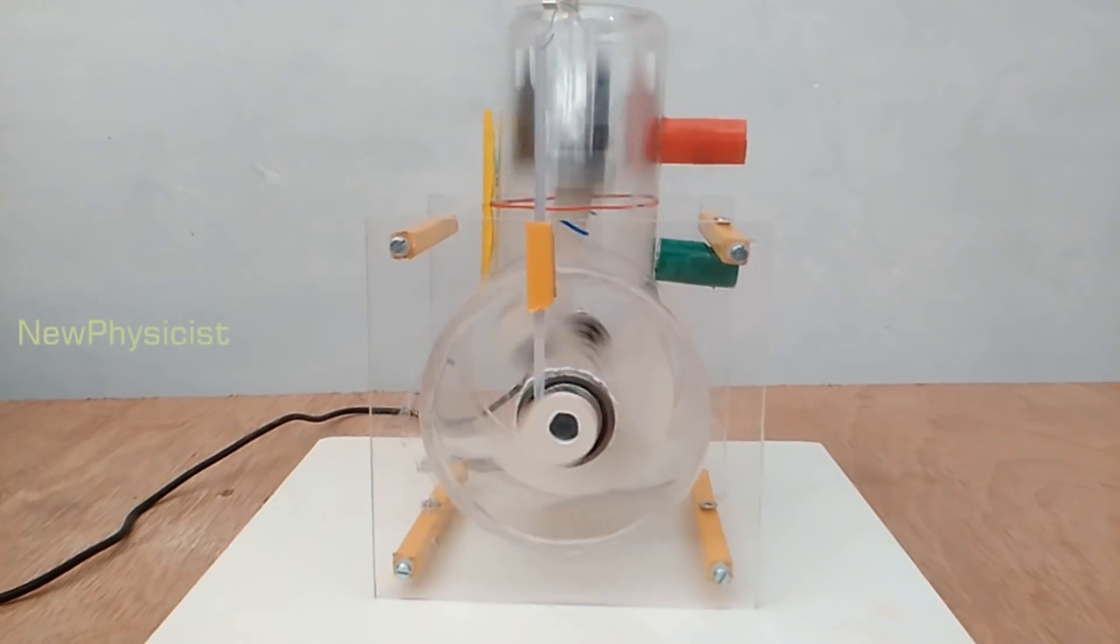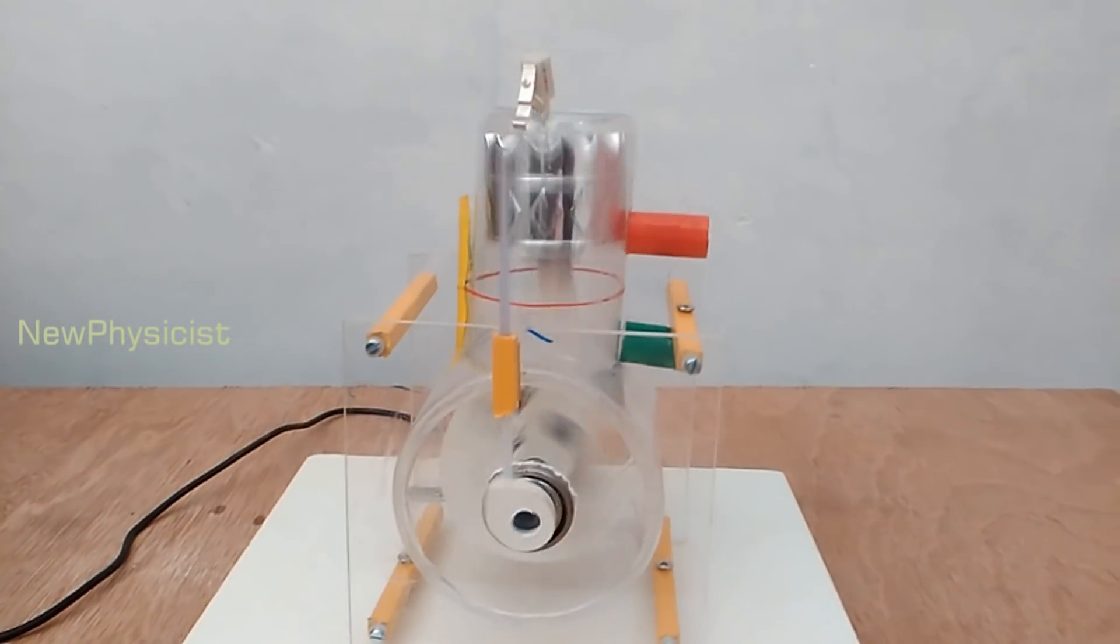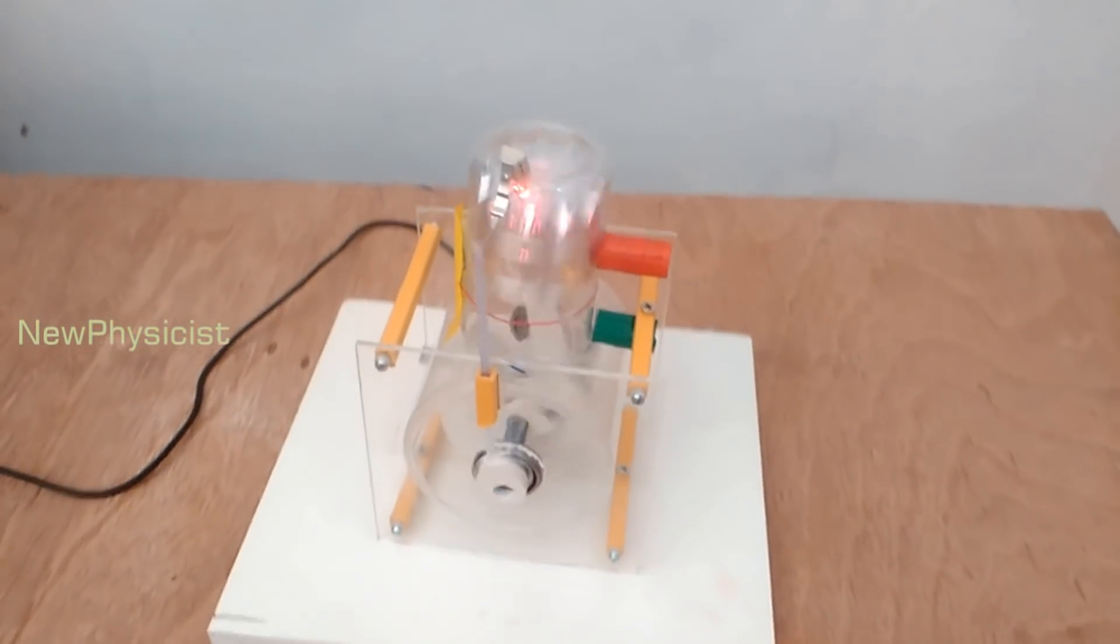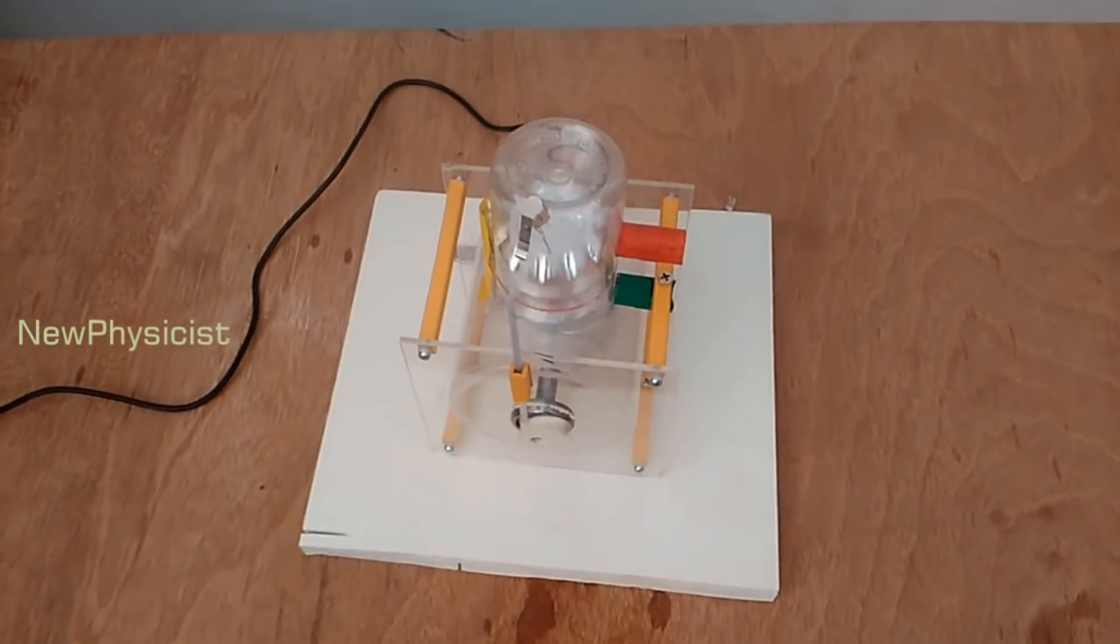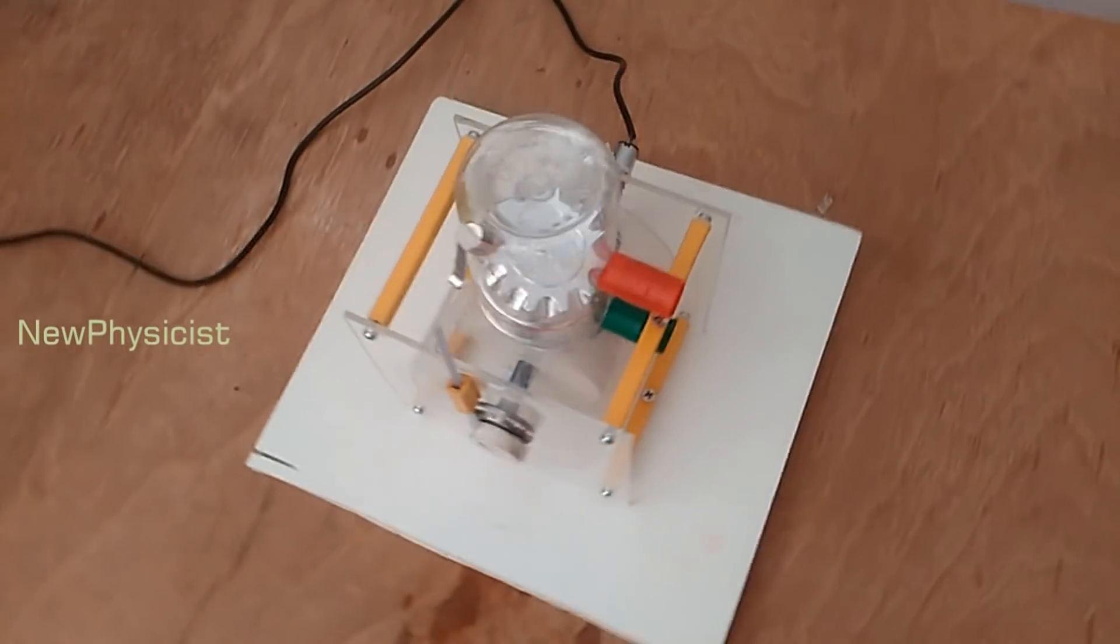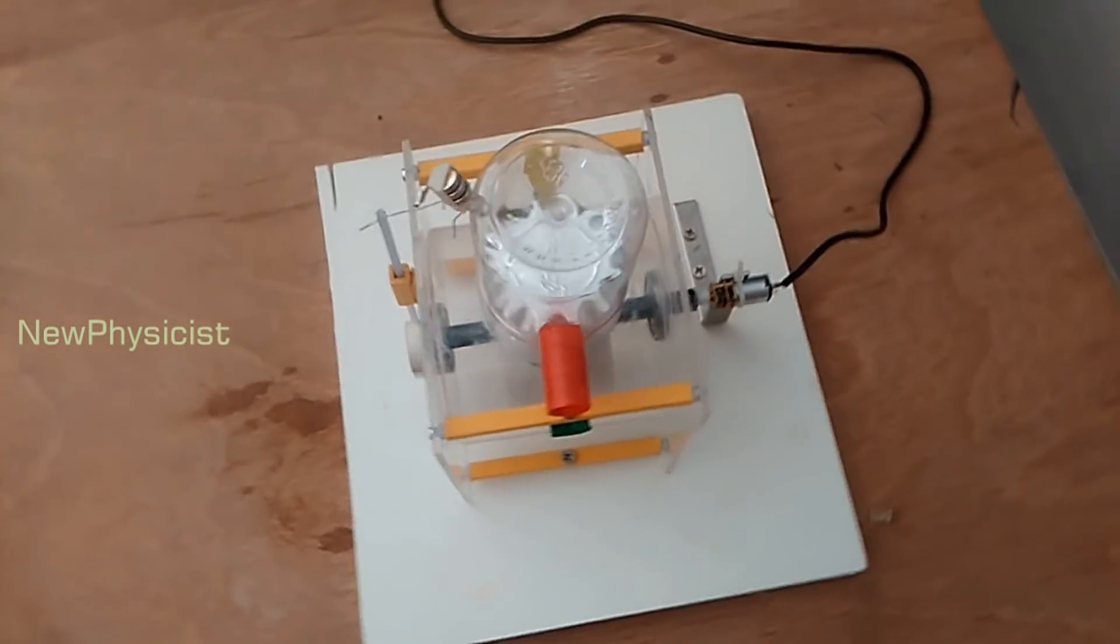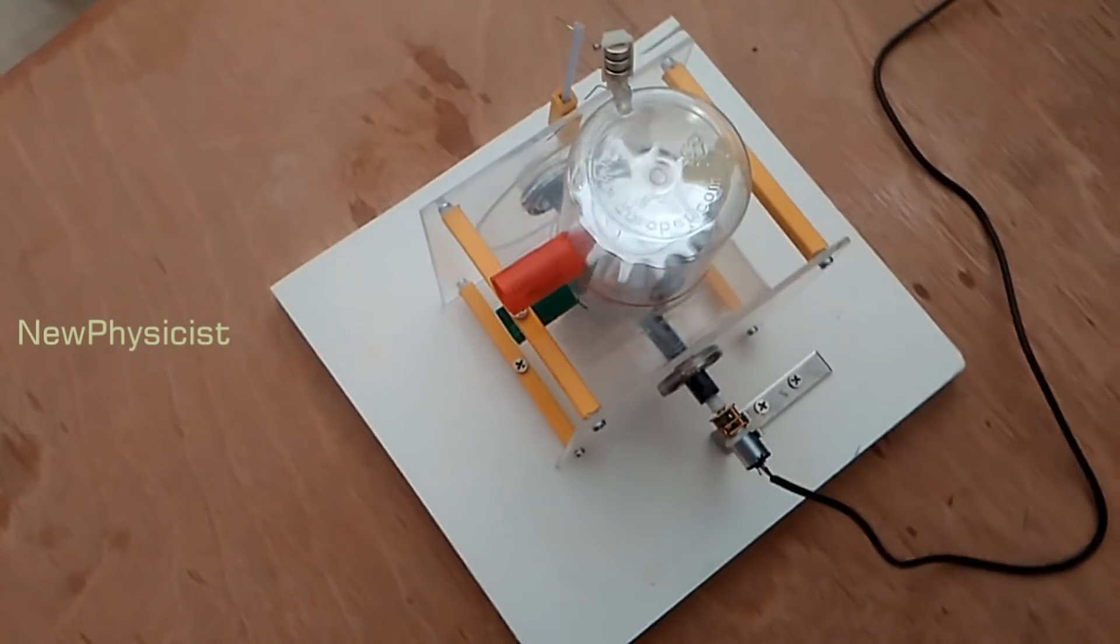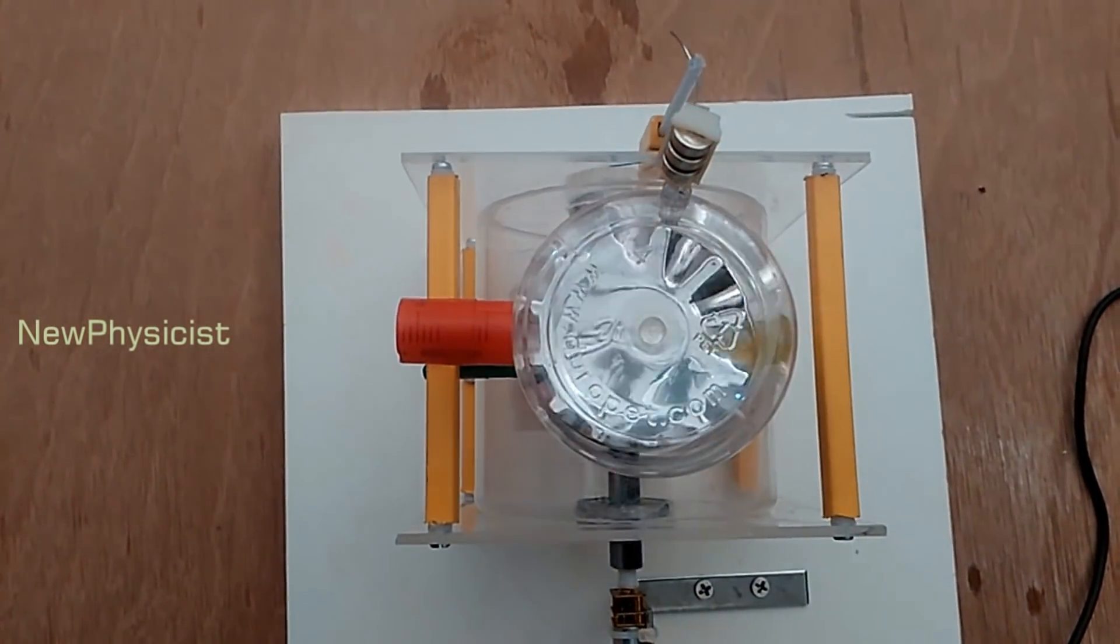This process of filling the cylinder while also pushing leftover exhaust gas out the exhaust port is called scavenging. While the piston is near bottom dead center, mixture continues to move from the crankcase up through the transfer ports and into the cylinder.